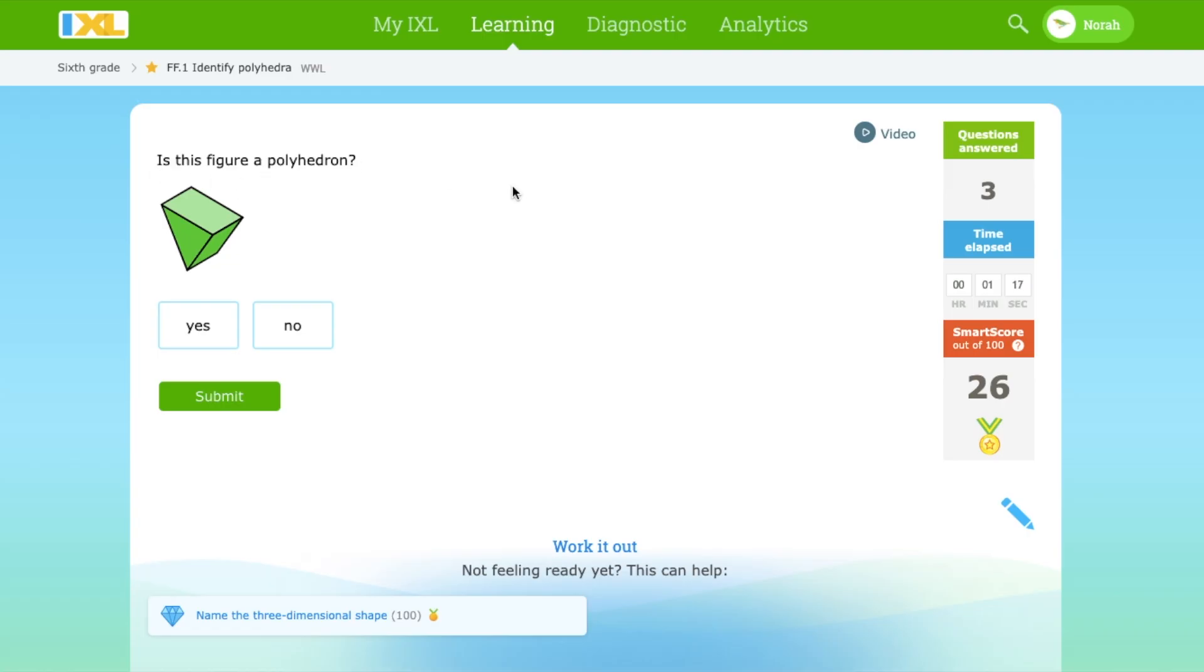So is this figure a polyhedron? This is a polyhedron because if you can see here, this has a face here, a face here, and a face here. So this is a polyhedron.